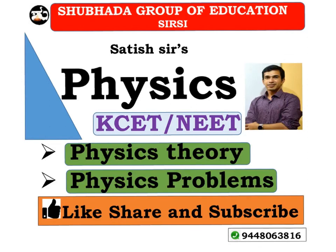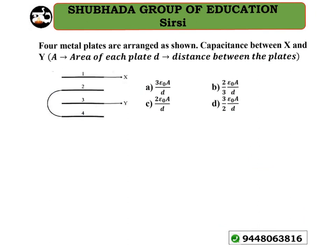Hi guys, welcome to our channel Shubhada Group of Education. You are watching physics videos for KCET as well as NEET. Look at the problem on capacitance: four metal plates are arranged as shown in the figure. The capacitance between X and Y is to be found, where A is the area of each plate and d is the distance between the plates.